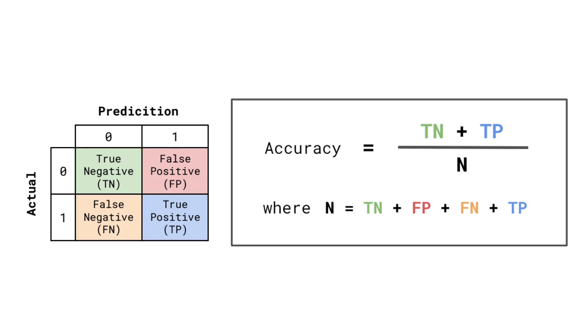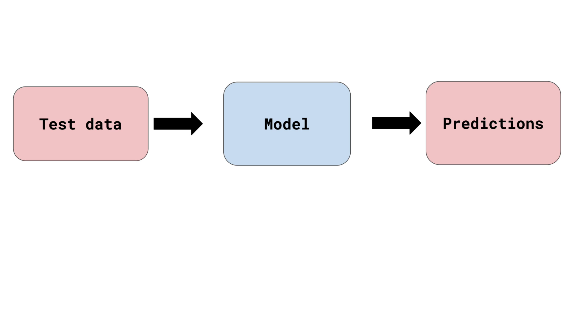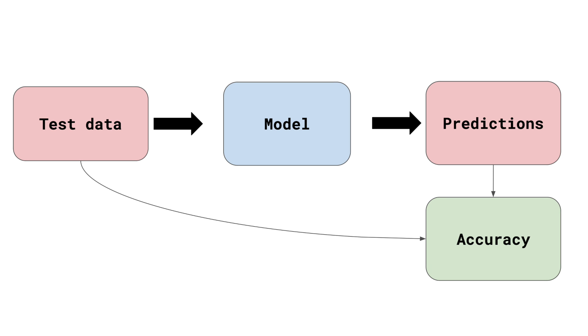Most evaluation metrics are model agnostic. Take accuracy, for example. For classification, accuracy is the percentage of instances that had a correct class prediction. To do this calculation, we need to compare the target class in the test dataset to the predicted class. In other words, we only need the model predictions and not the model itself. Some models may be more accurate than others, but the accuracy calculation will always be the same. In practice, it is not common to refer to evaluation metrics as model agnostic — the term is more for when we are talking about XAI methods.